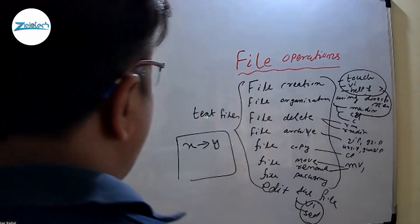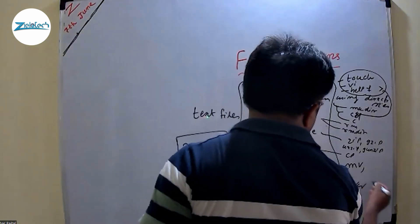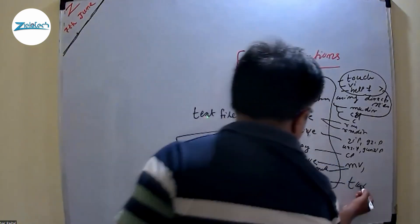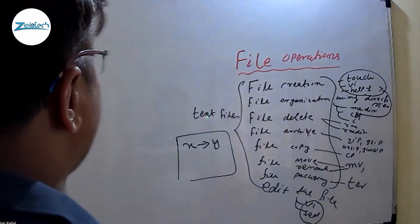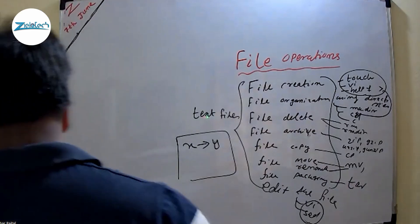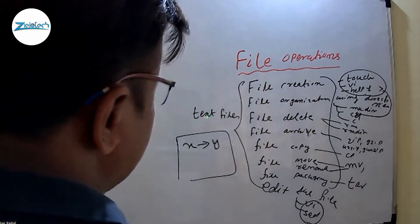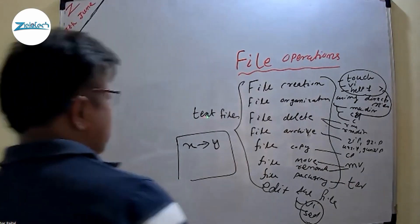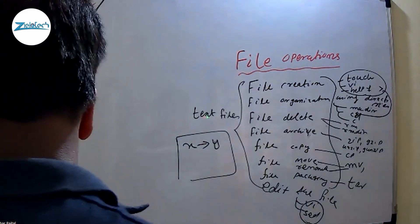Then file packaging, there is a command called tar. So within the tar command, we are going to create a tar package of any of the files. So in the Java, we are telling jar package. In Linux, it is called tar package. These are the operations we are going to perform here.